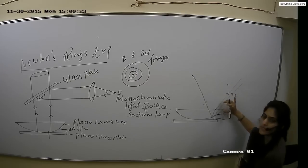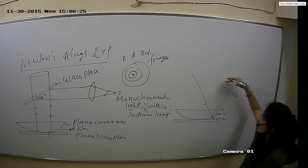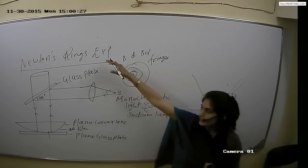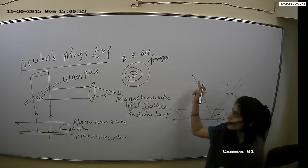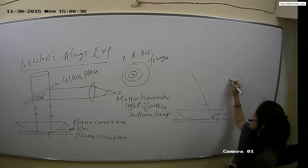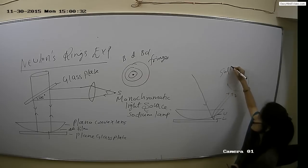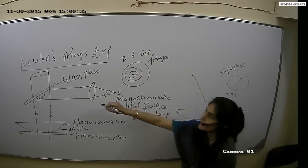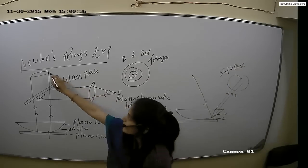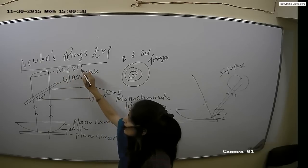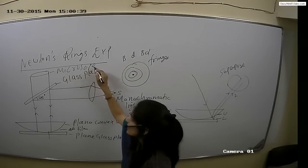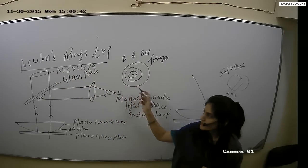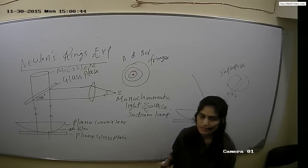In this way we get two interfering rays — rays one and two — which superpose. With the help of a traveling microscope, we observe these circular fringes. This is the working of Newton's ring experiment.